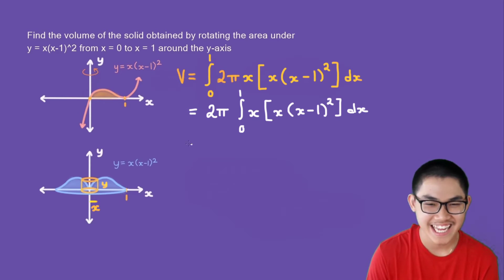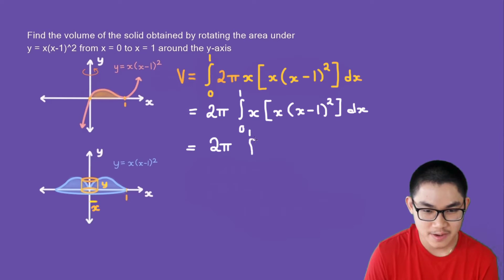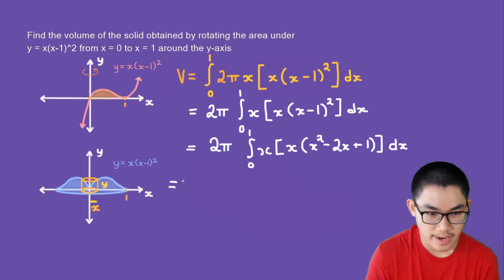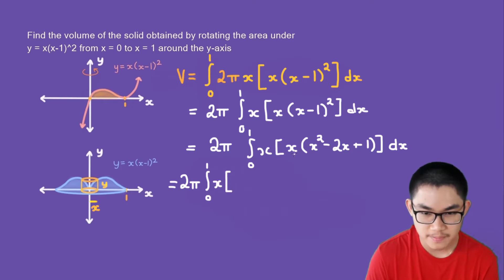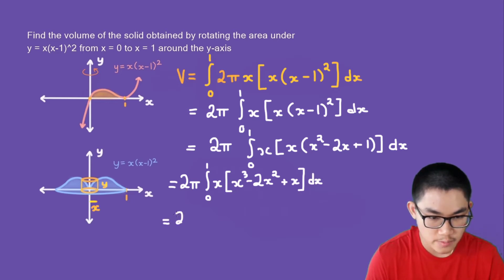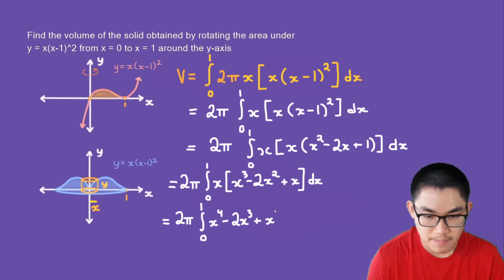The last step is to evaluate this integral. Since 2π are constants, we can bring them outside of the integral. We expand (x minus 1) squared to get x squared minus 2x plus 1. Then multiplying through by x times x gives us x to the power of 3 minus 2x squared plus x, and further by x gives x to the power of 4 minus 2 times x to the power of 3 plus x to the power of 2, dx.